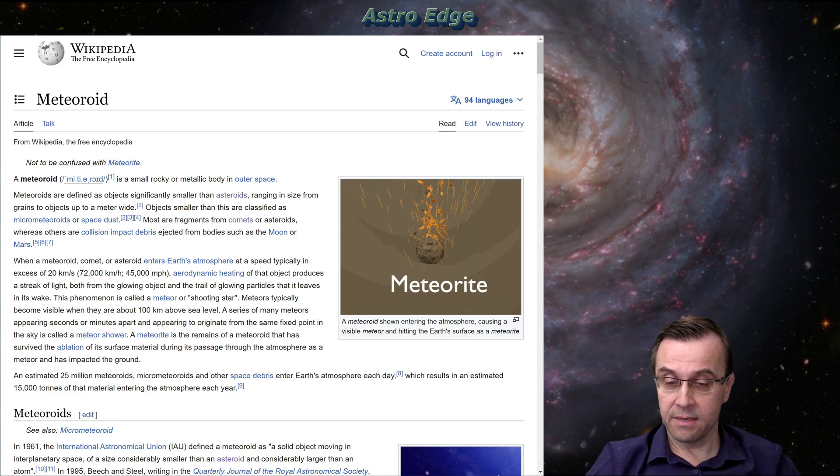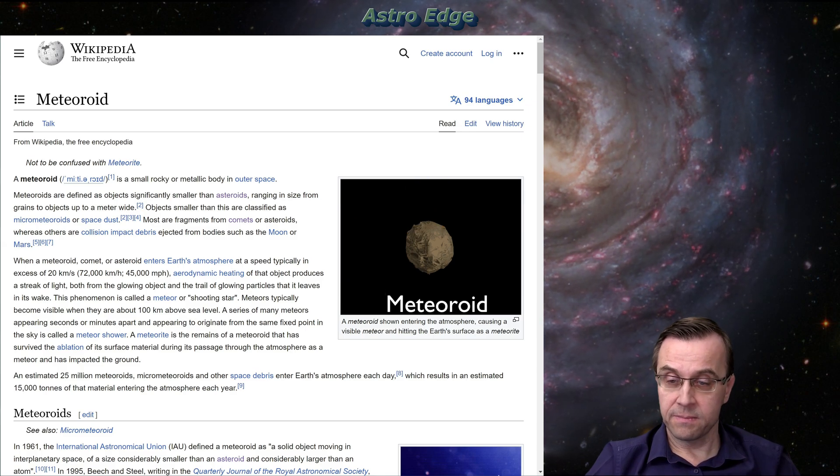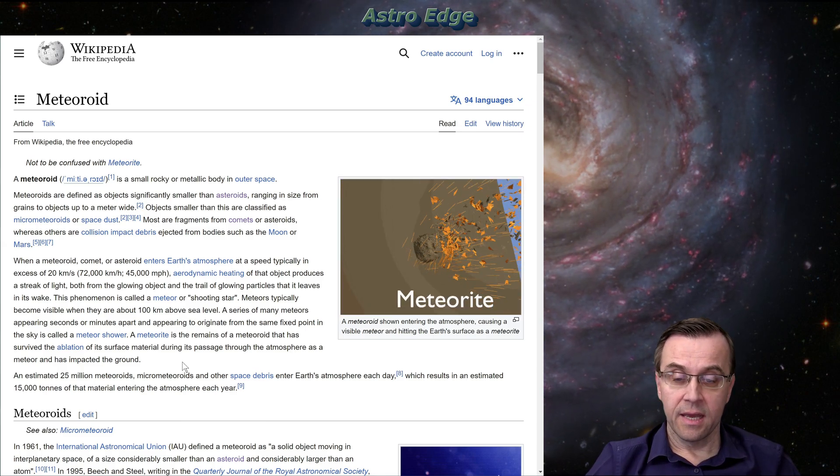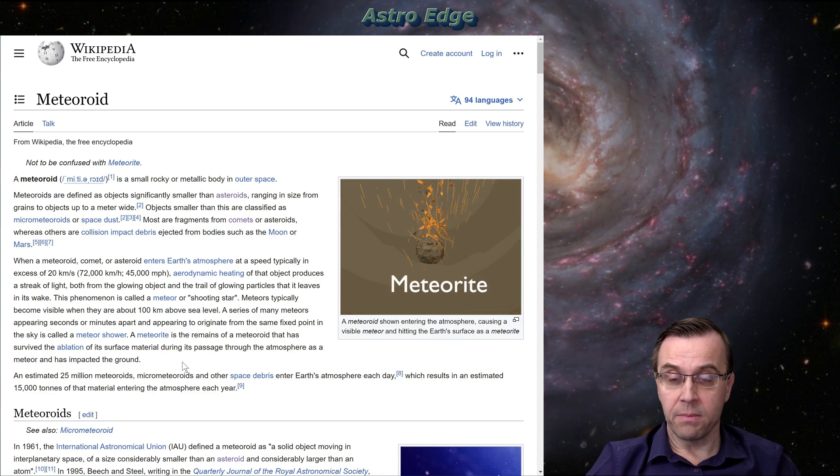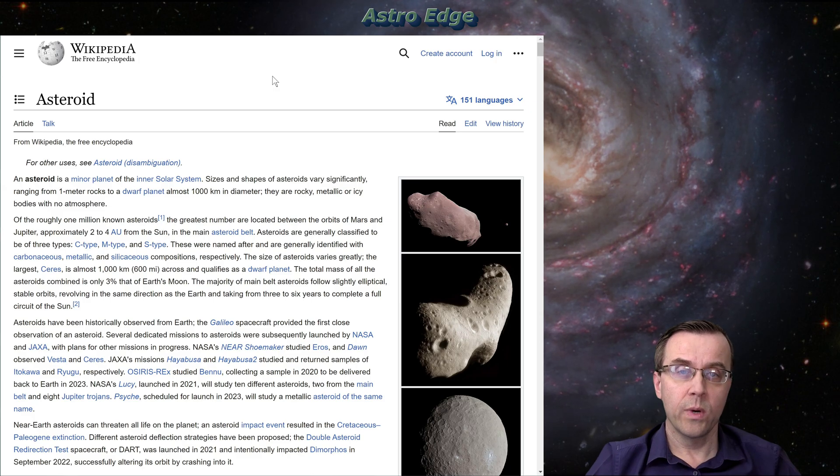Before they enter the Earth atmosphere, they're called meteoroids and we call meteor the shooting star effect. The effect which happens when these tiny pieces of dust fly through the atmosphere at very high speed, tens of kilometers per second, and most of them burn up high in the atmosphere. So why is there interplanetary dust? Where does it come from?